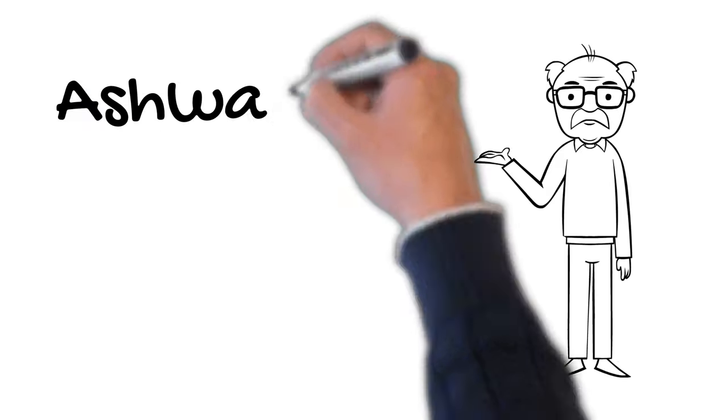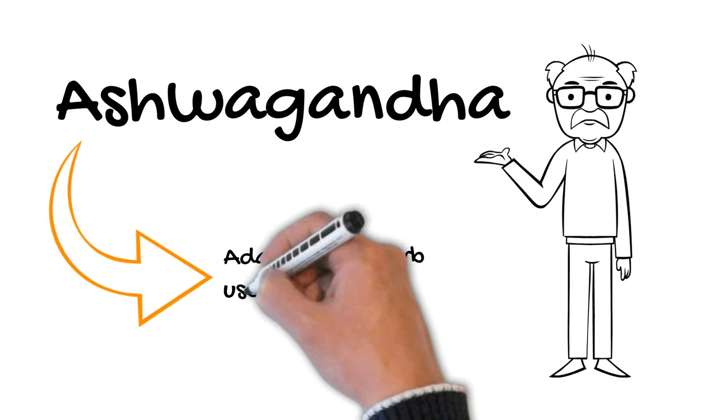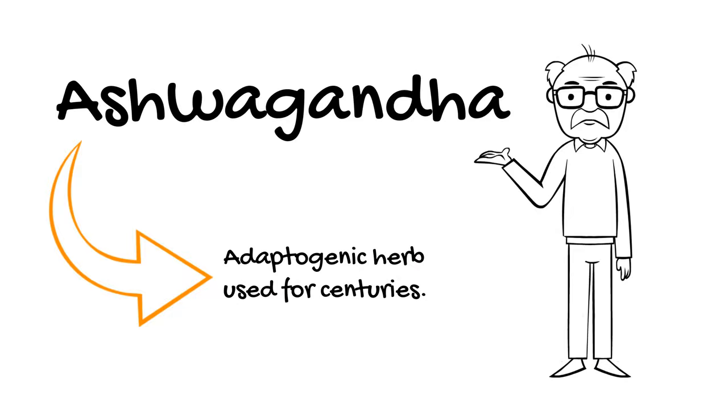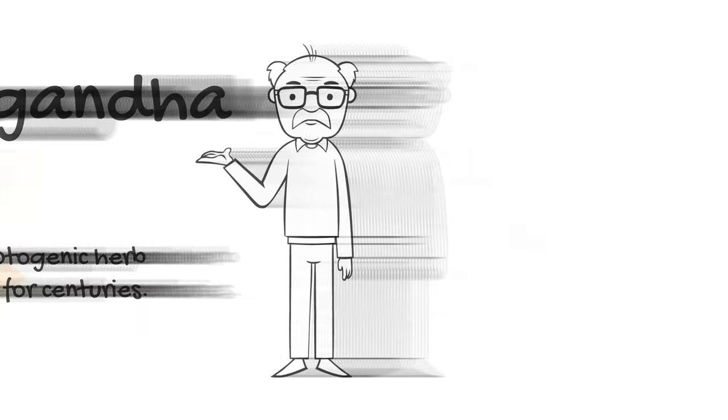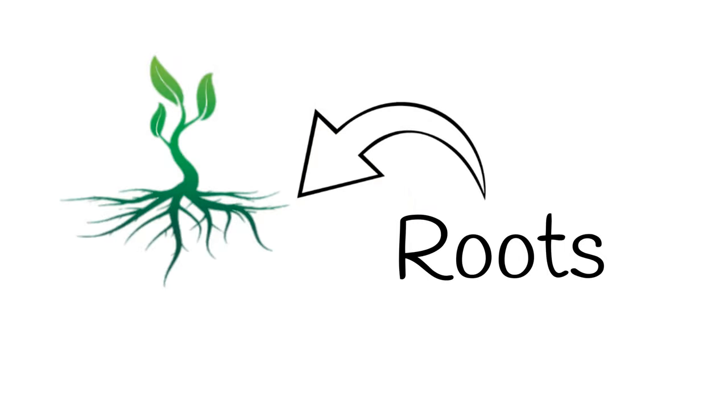Today we're going to talk about ashwagandha. This is an adaptogenic herb that has been used for centuries in Ayurveda, the traditional Indian medicine. The most potent part of this herb are its roots, and that's what most high-quality extracts are made of.